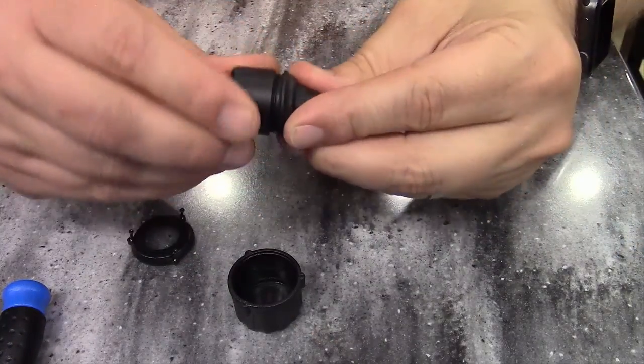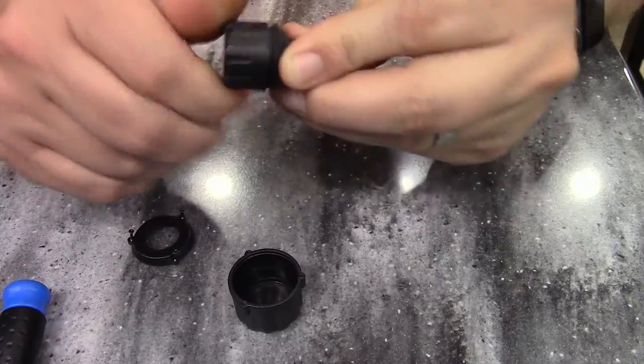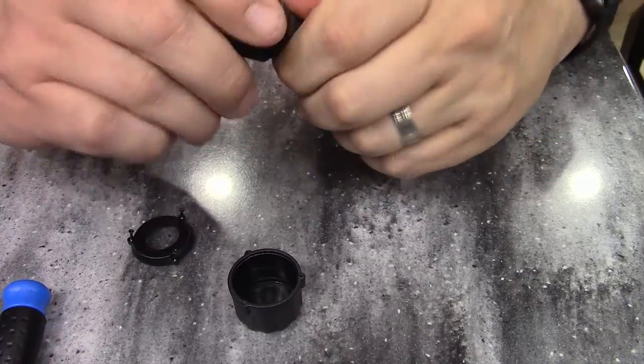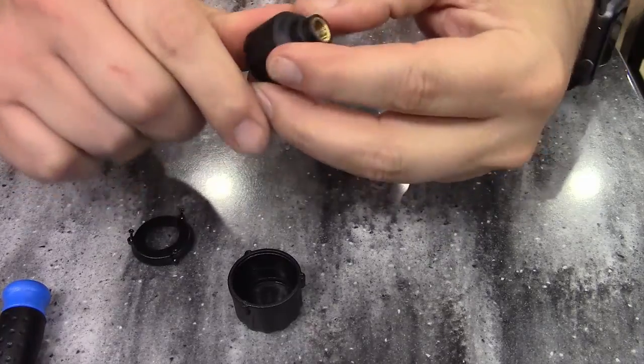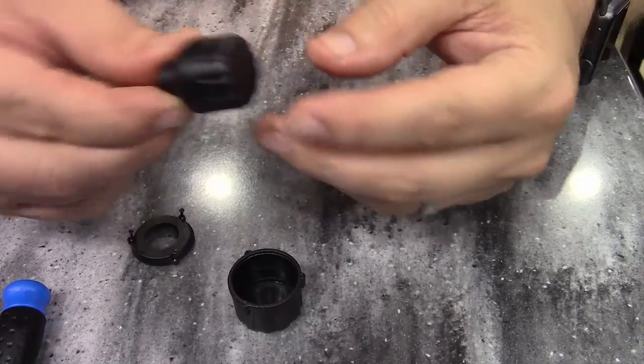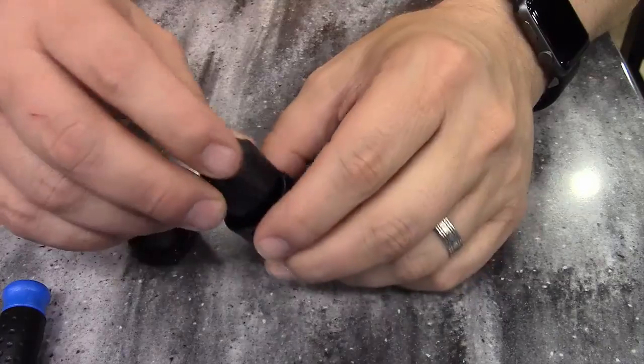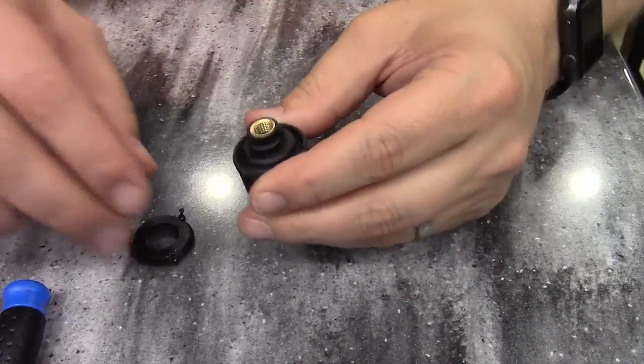All we have to do is put the cap back on. Make sure it screws on down onto that O-ring nice and snug. And again, it can be used just like this. But if you want the anti-theft device, you just pop it back in here.